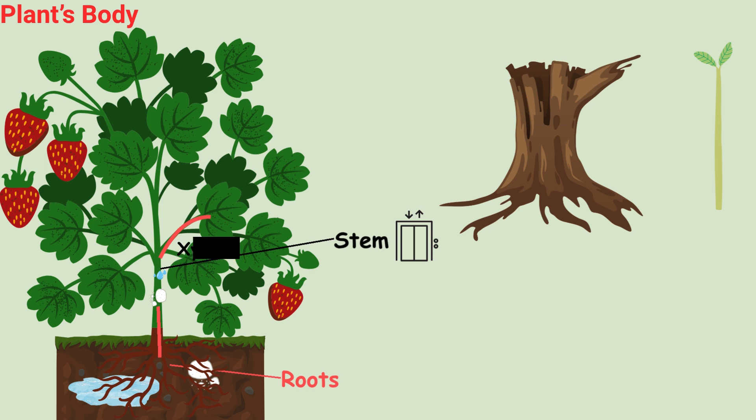Inside the stem there are xylem, which moves water up from the roots, and phloem, which carries food from leaves to the rest of the plant.